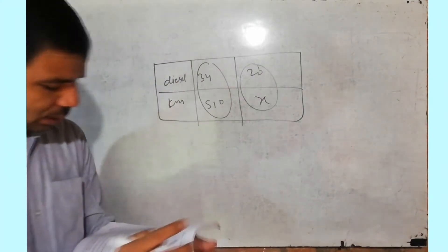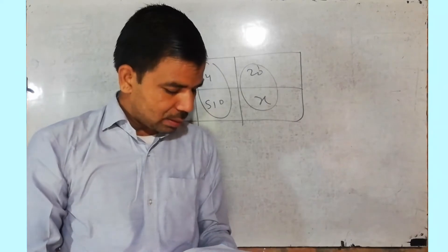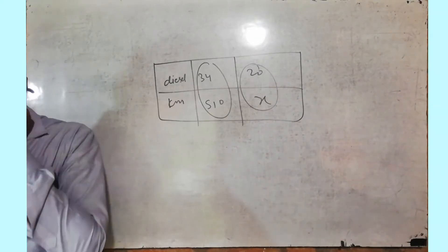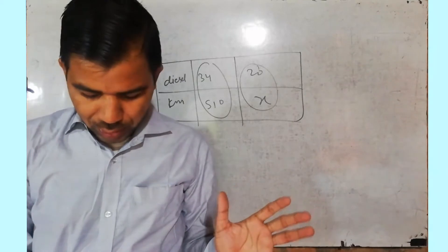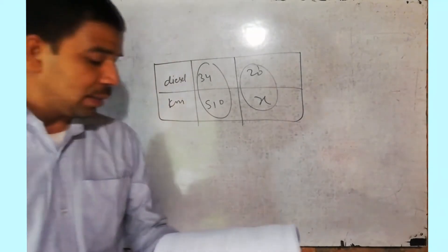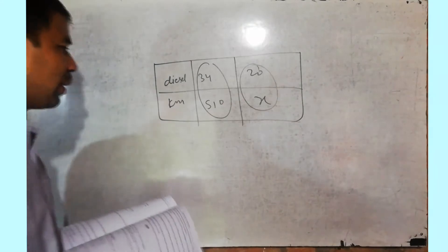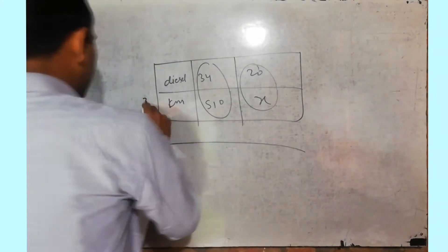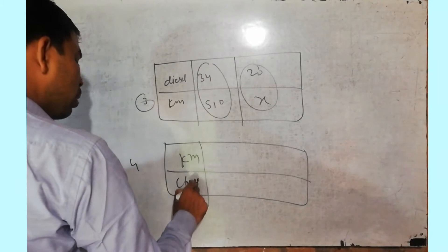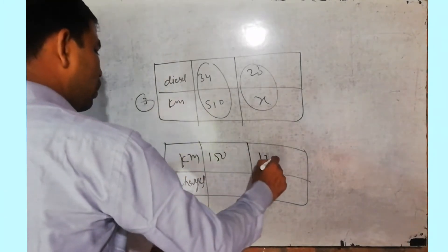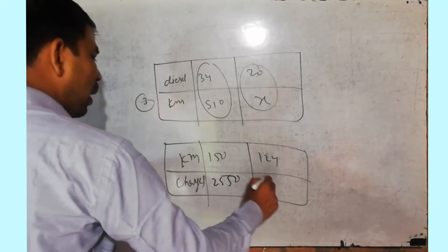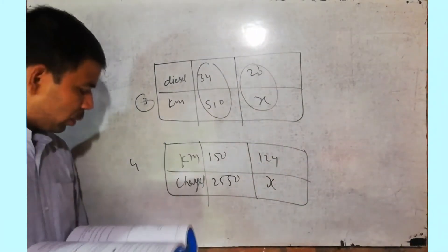Question number 4: a taxi charges a fare of 2550 rupees for a journey of 150 km. Simple question — make a table with km and charges. 150 km corresponds to 2550 rupees. Here the distance is 124 km, find X (the charge). This is a straightforward direct proportion question.